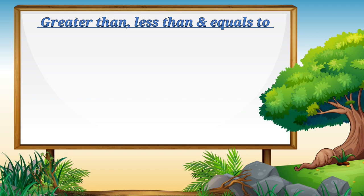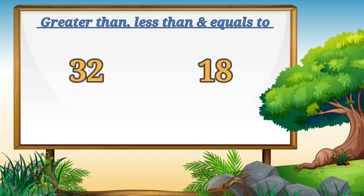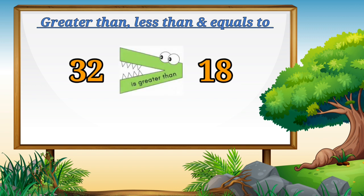Now children, look at the board. Let's compare the numbers and see which side Mr. Coco will open his mouth. Tell me children, which number is greater — 45 or 25? Yes, number 45 is the greater number. So Mr. Coco's mouth will open towards number 45. Next, which number is greater — 18 or 32? That's right. Number 32 is greater than number 18. So Mr. Coco's mouth will open towards number 32.